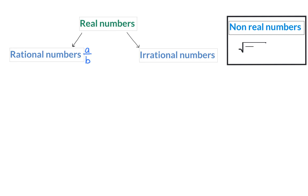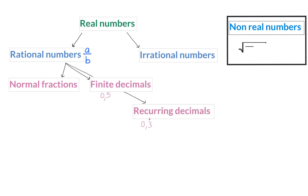Because a rational number is a number that can be written in the form a over b, it includes all normal fractions. Finite decimals, recurring decimals, as well as integers, can all be rewritten in the form a over b and are therefore also rational numbers.